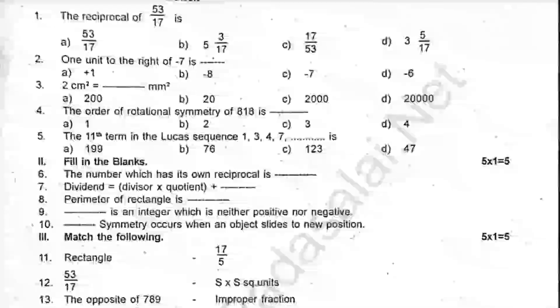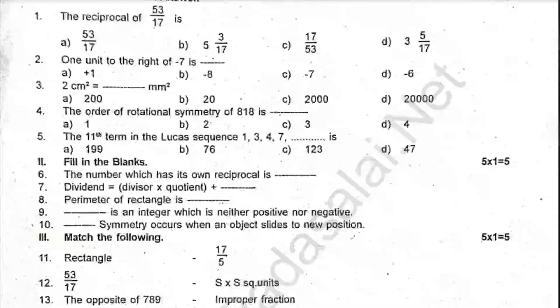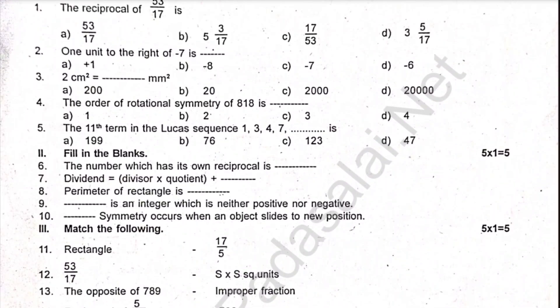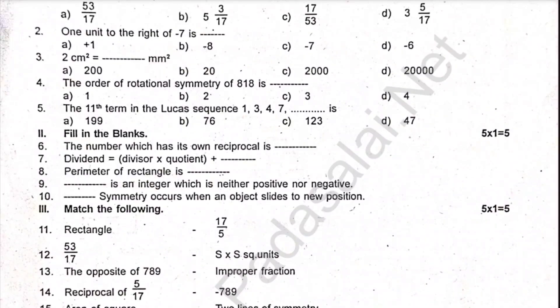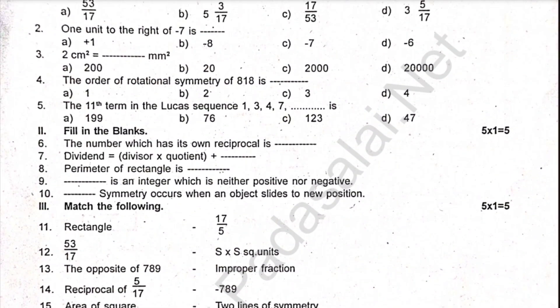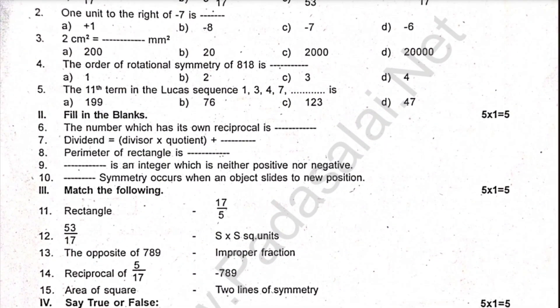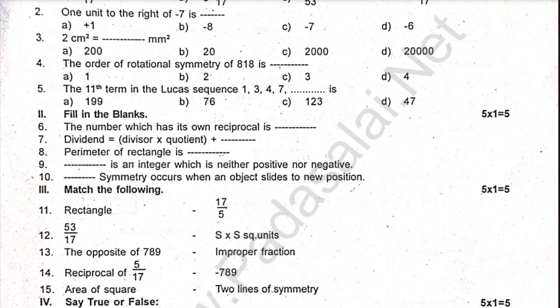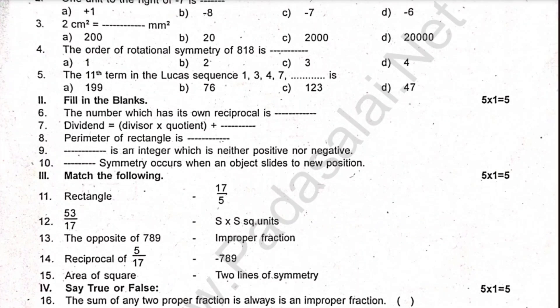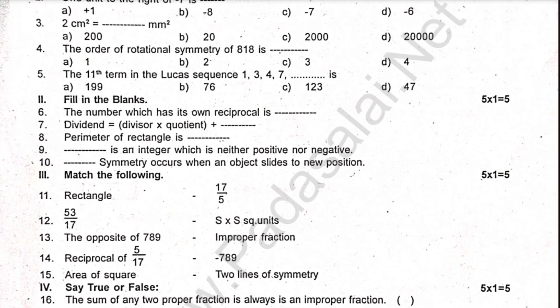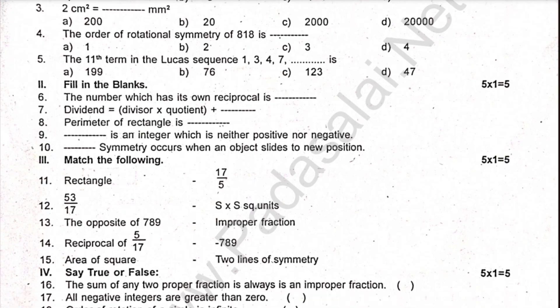True or false — 5 questions. The sum of any 2 proper fractions is always an improper fraction. All negative integers are greater than 0. Order of rotation of a circle is infinite. S has no line of symmetry. Minus 10 and plus 10 are at equal distance from 0.